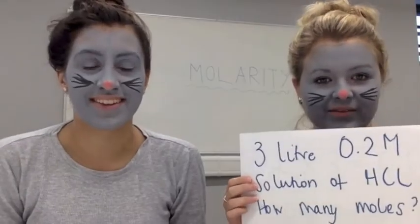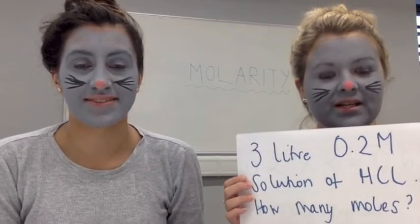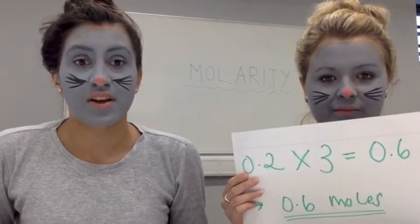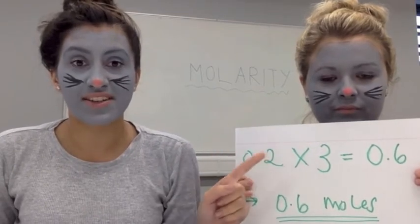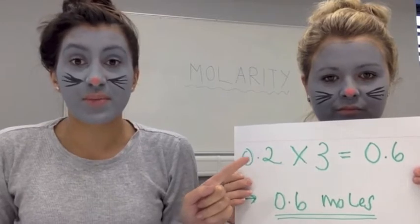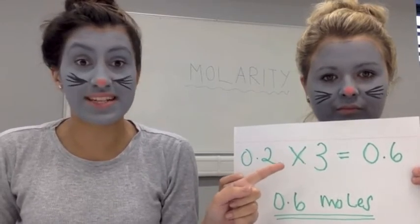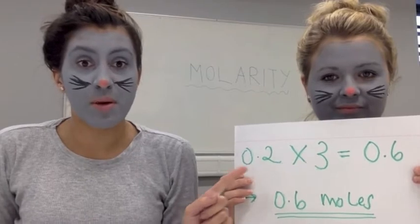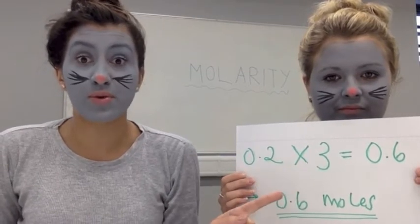So if we had a 3 litre 0.2 molar solution of hydrochloric acid, how many moles would we have? We know that the molarity of the solution is 0.2, so we multiply this by the volume of the solution in litres: 0.2 multiplied by 3 equals 0.6 moles in total.